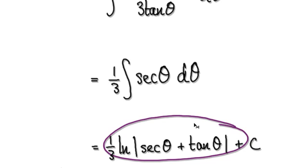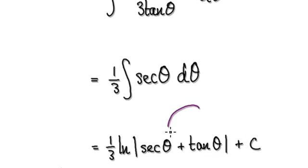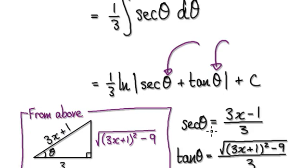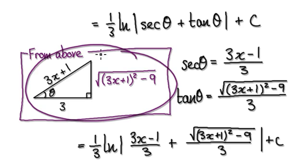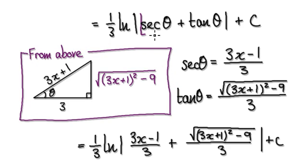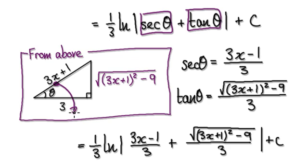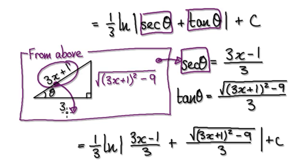So once we're here, this is our answer. But we don't want the answer to be in terms of theta. So now we revert back to your diagram. This was our diagram here. We want to somehow replace this and this. From the diagram, secant would be this — you can obtain secant is hypotenuse over adjacent.